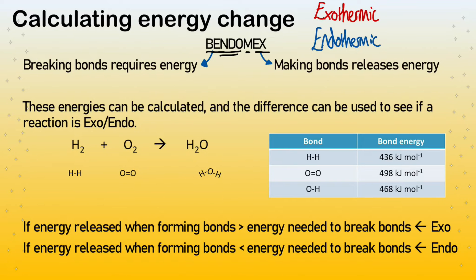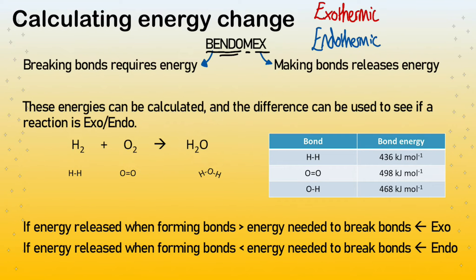These energies can be calculated — this is the higher tier skill, slightly numerically based but mostly problem solving. The difference can be used to see if the reaction is exothermic or endothermic — whether it's releasing more energy than it's taken in or less. A good example is the burning of hydrogen with oxygen to make water. If you burn hydrogen it's pretty explosive and releases a lot of energy, so we know it's exothermic — but can we prove that using bond energy calculations?